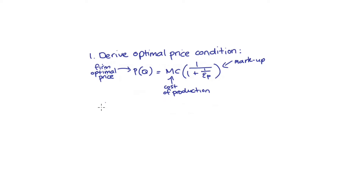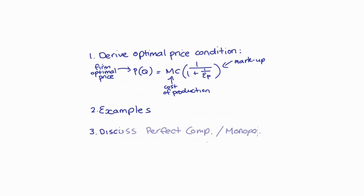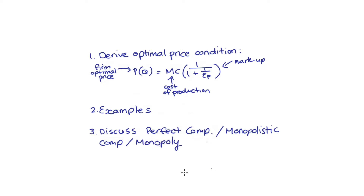The second part goes through a couple of examples, and the third part links the whole discussion to our models of perfect competition, monopolistic competition, and monopoly. I've marked these parts as chapters, the details of which are in the description below, so you can skip to the part that you're interested in if you don't want to watch the whole video.